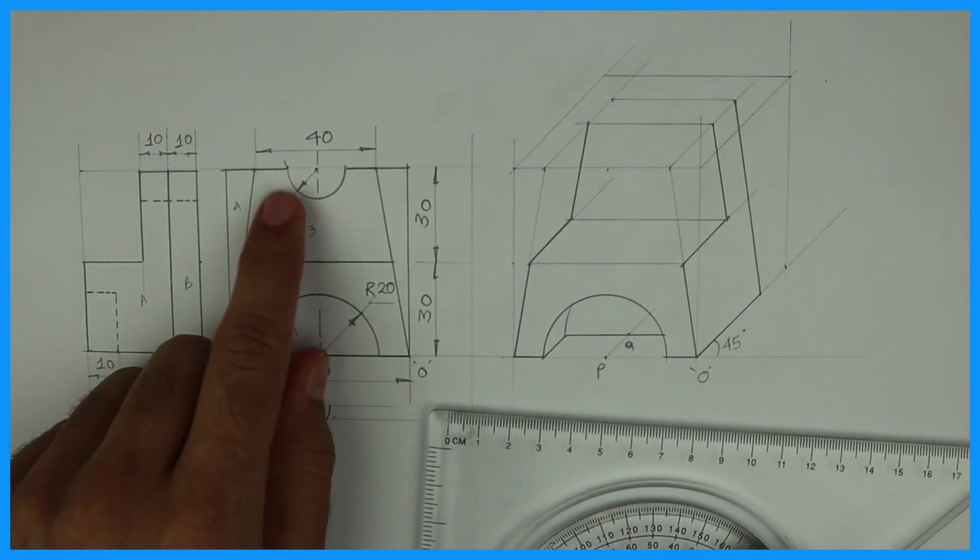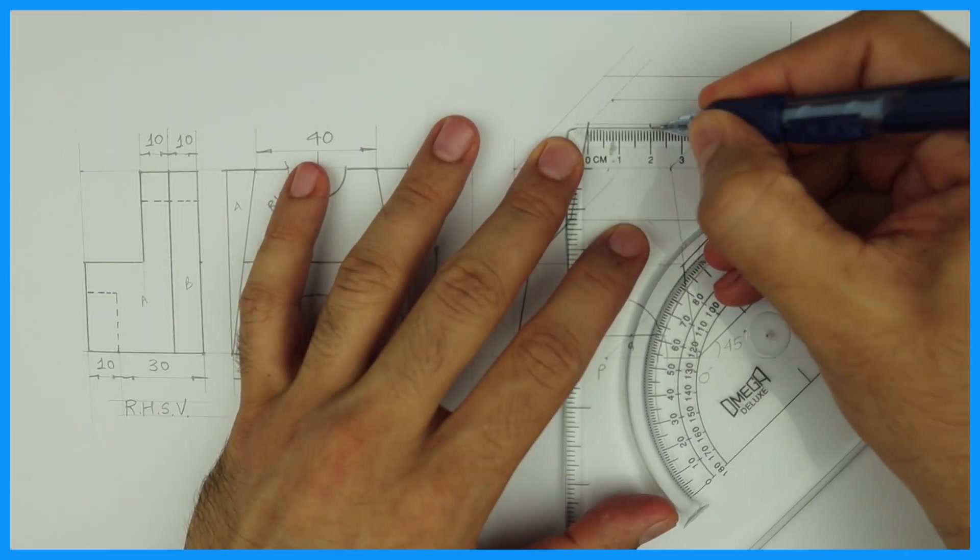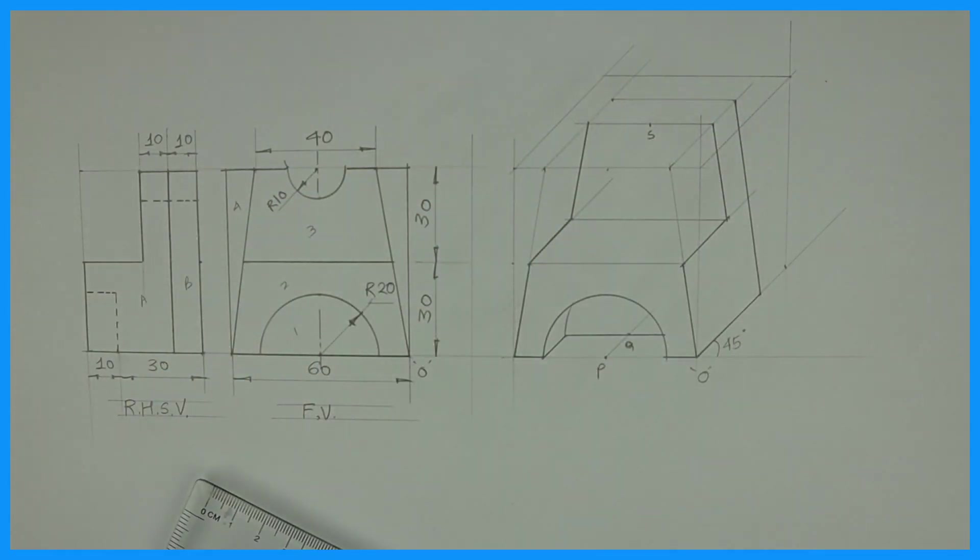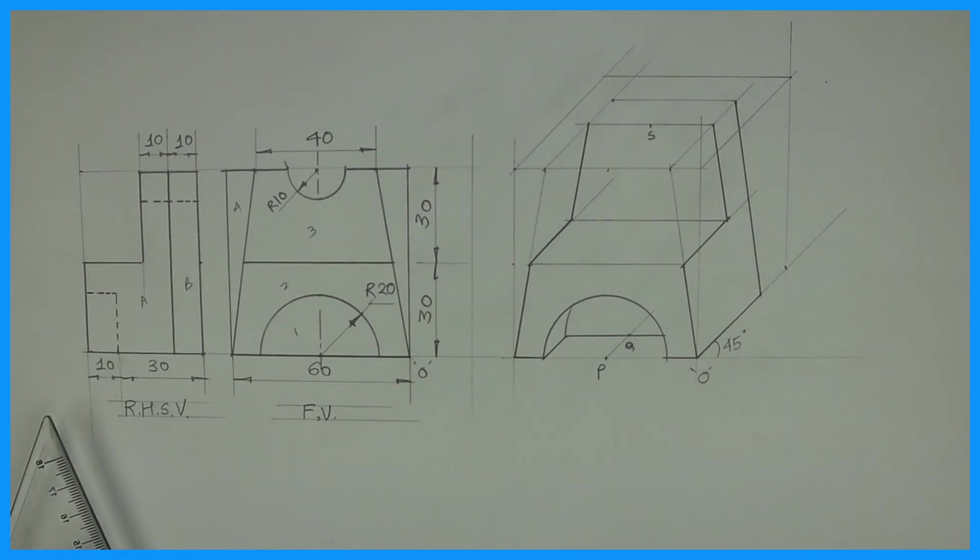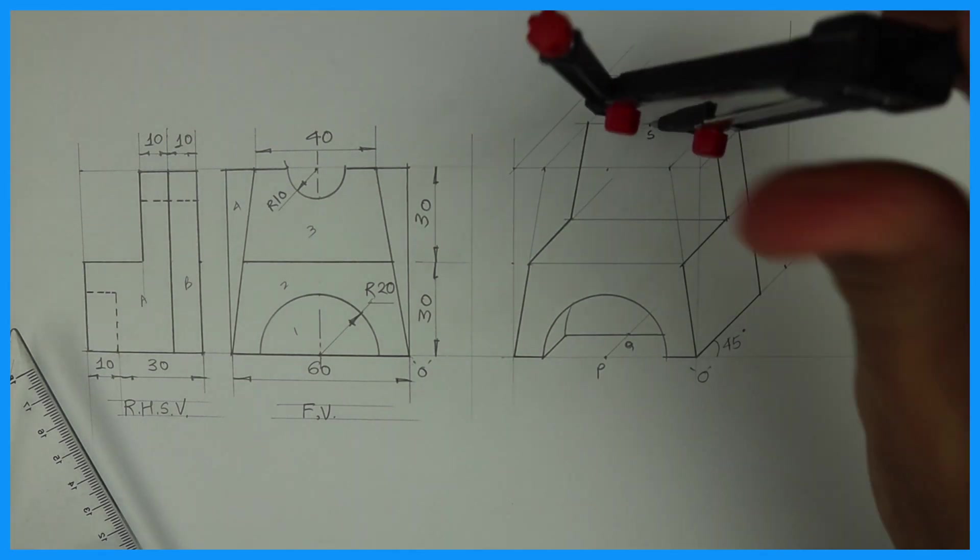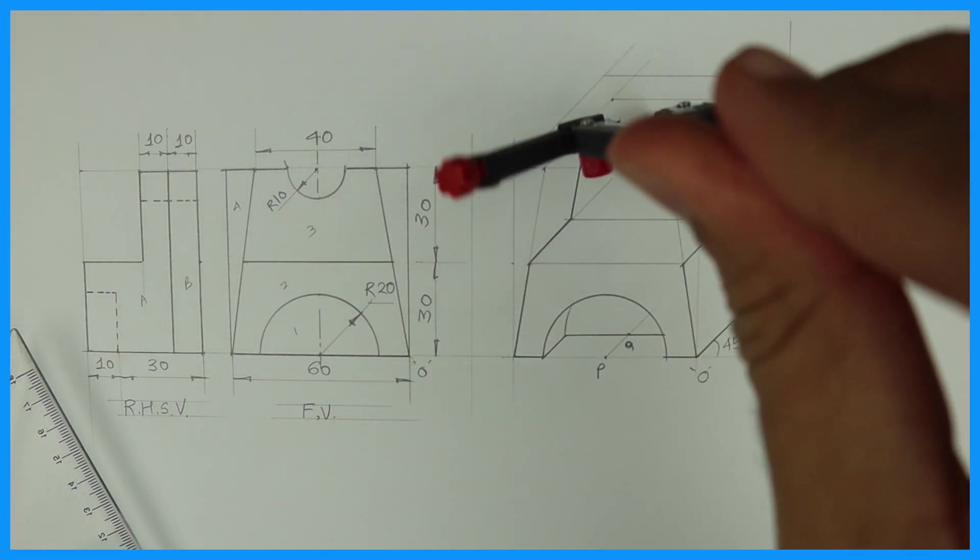Now we will see the upper one. Take center point S. From S, you draw radius 10. In this also, we are doing the same thing what we did down. Point cube.